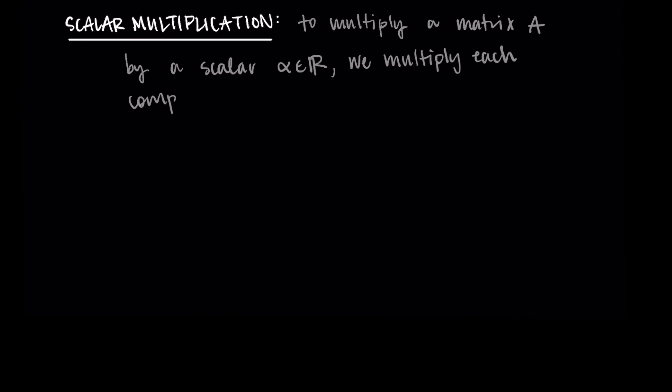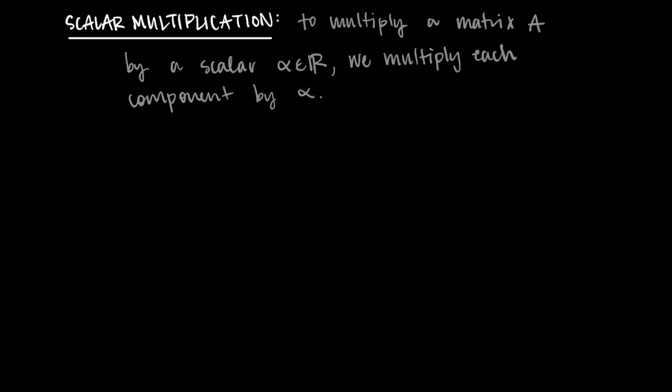In order to multiply a matrix A by a real valued scalar alpha, we just multiply each component of A by alpha. So I have alpha times the matrix A. This is going to be alpha times our general matrix where the entries are a_ij.